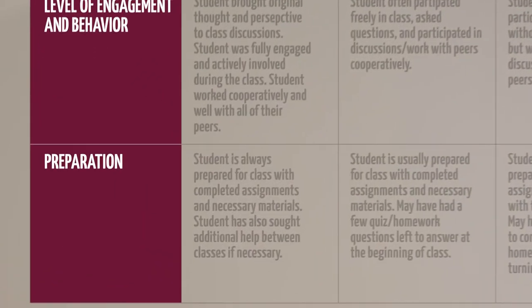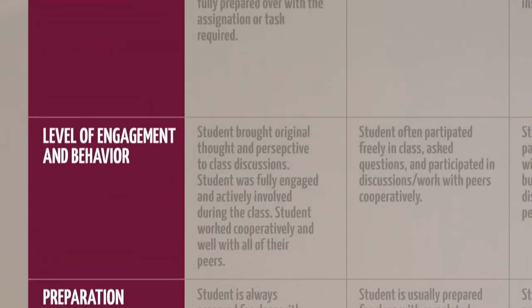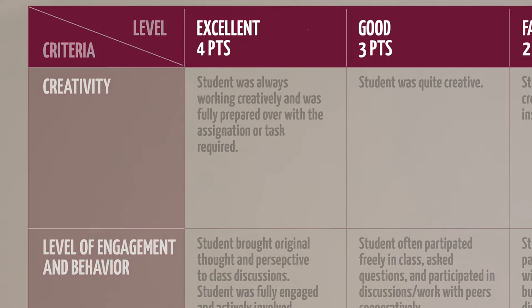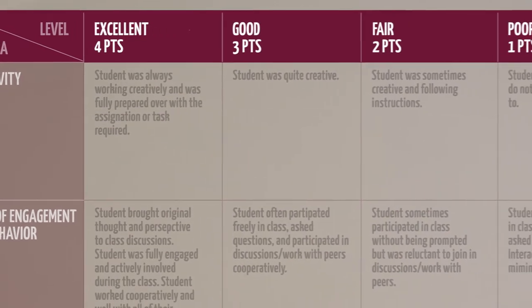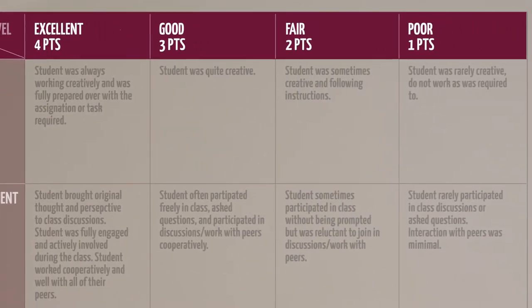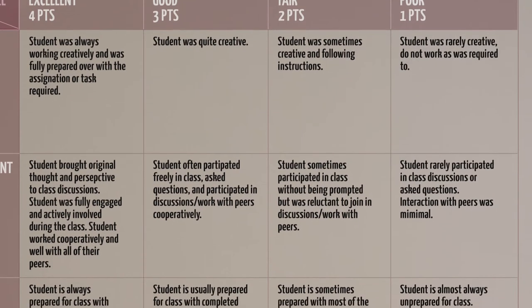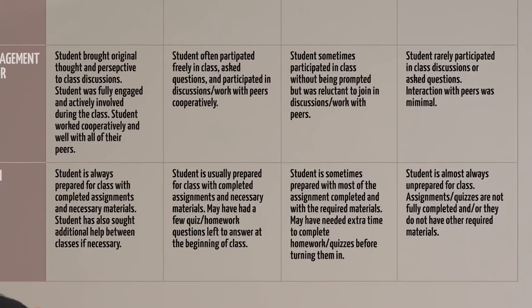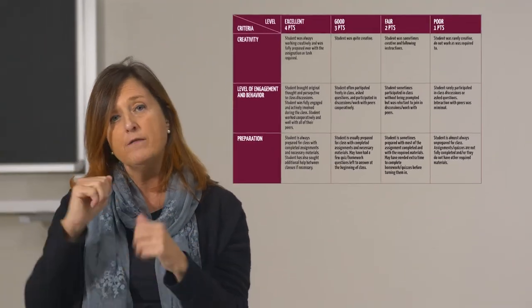In the first column are listed the criteria you want to investigate, ideally the ILO to be assessed. While in the others are detailed the scale and scoring that describes the level of mastery and the description of the different levels of performance quality of the component dimensions at each level of mastery.